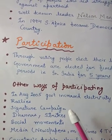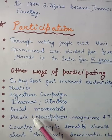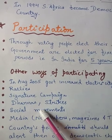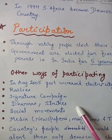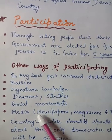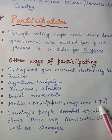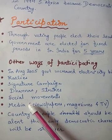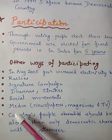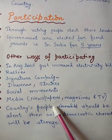Other ways of participation include dharnas and strikes. There are also social movements — people who are not considered equal, like lower caste people and women, organize themselves into social movements. Media also plays an important role: newspapers, magazines, and TV show the opinion of the government and the people, reporting what laws are being made and how people are reacting.